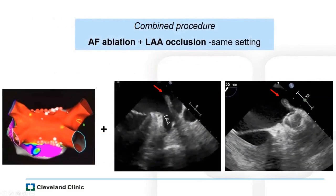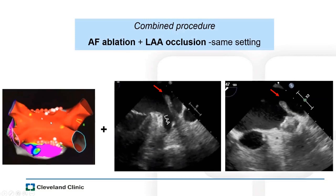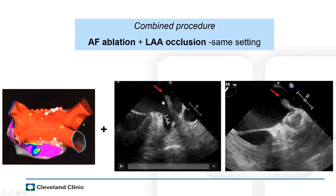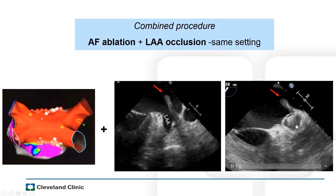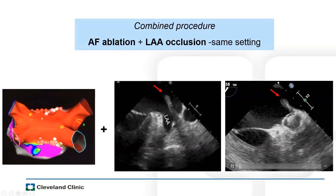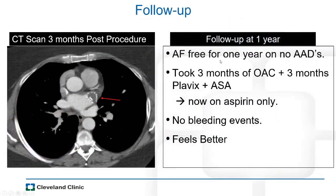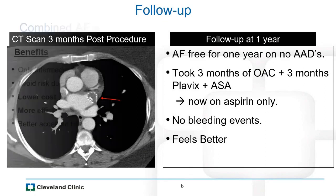This patient had an AFib ablation, and since we were already in the left atrium, we simultaneously placed a Watchman LAA closure device. The ablation ridge becomes slightly swollen, but it is generally far enough from the device landing zone. At follow-up, she was atrial fibrillation-free on no antiarrhythmic medication. After three months of oral anticoagulation, she is now on aspirin alone with no bleeding events. Follow-up CT scan shows the Watchman device without contrast in the LAA, confirming adequate seal with no leak.